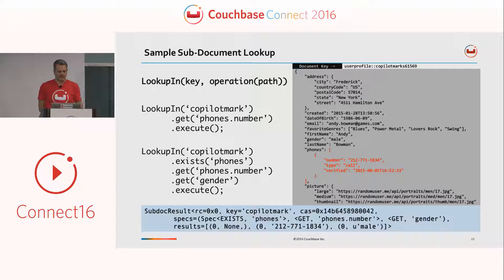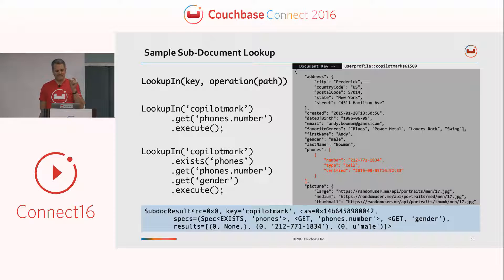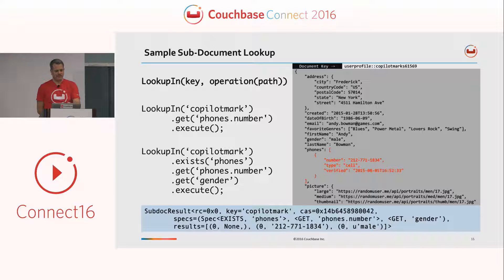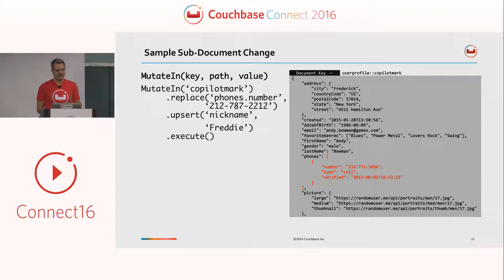We're going to look up one specific key — a person called Copilot Mark from our Couchbase music example. We're going to get just the phones object and see what it has set for a number. You can see we do an execute, so you can chain all these things together and then fire off the execute, and it does all the stages that have been defined above. We can check if something exists, we can get it, and in the mutate functions we can change it — we have replace and upsert options in there.